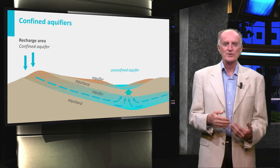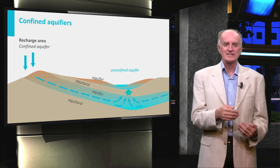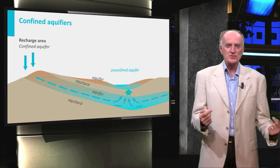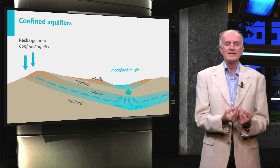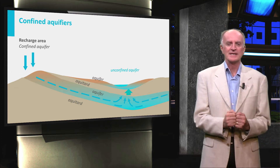Eventually, water can reach discharge areas, such as some rivers, or be pushed to move upward through the nearly impermeable layers as shown in the slide.